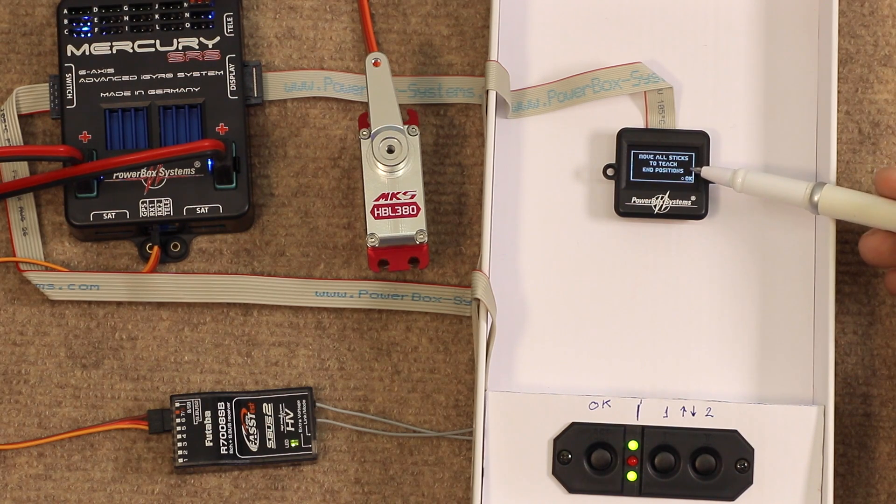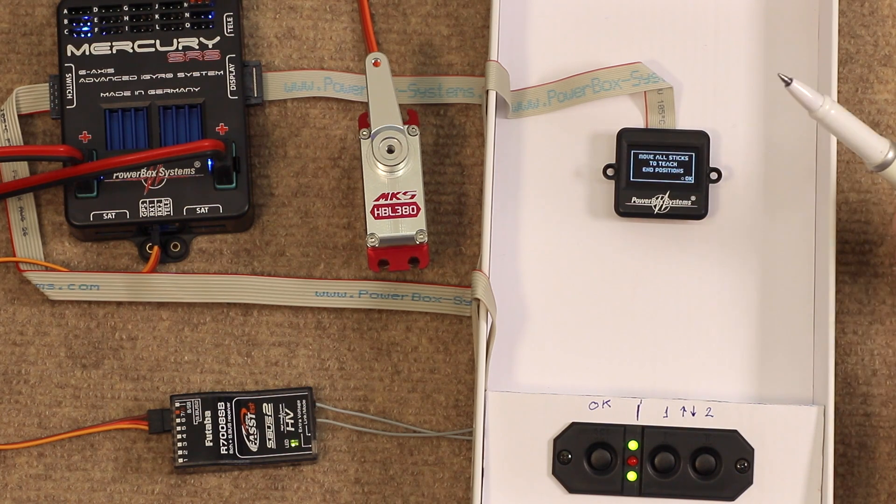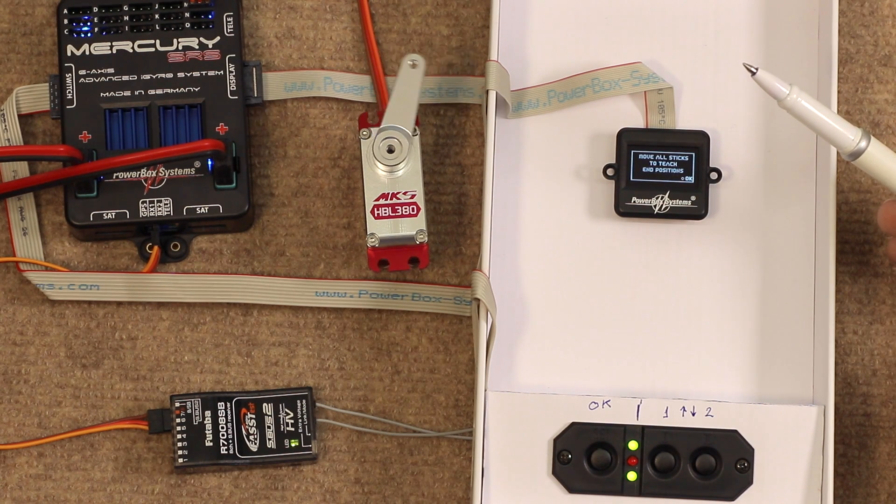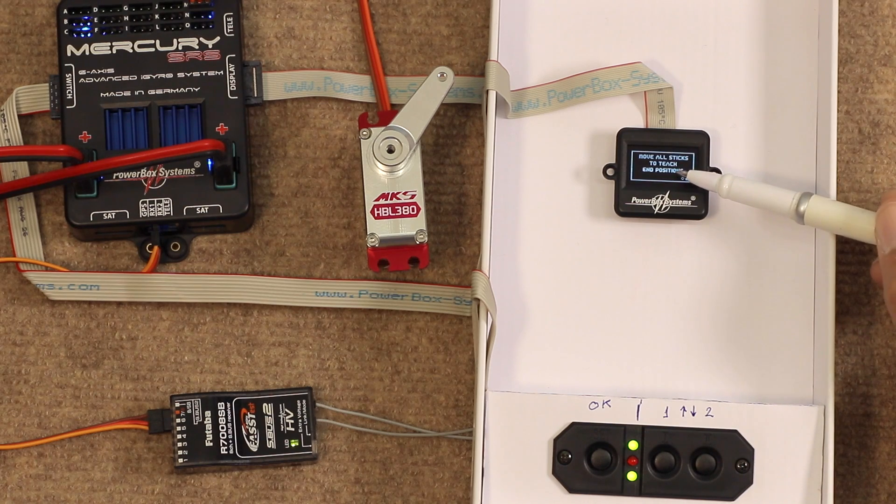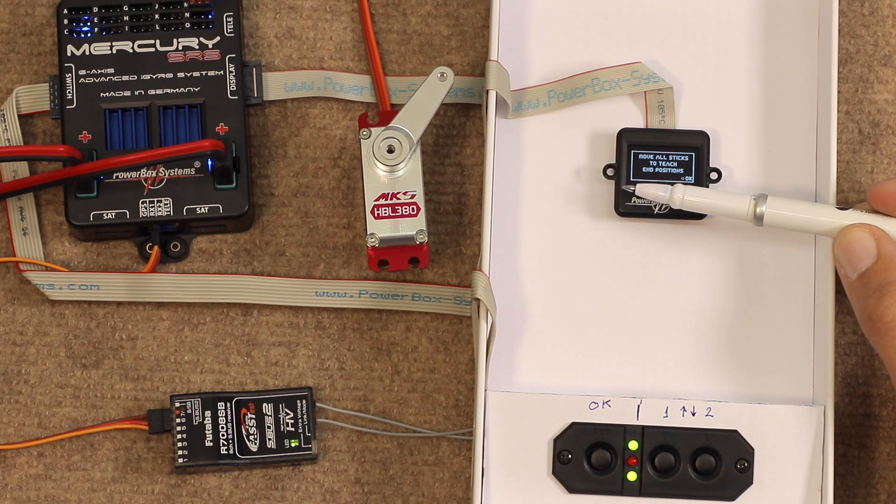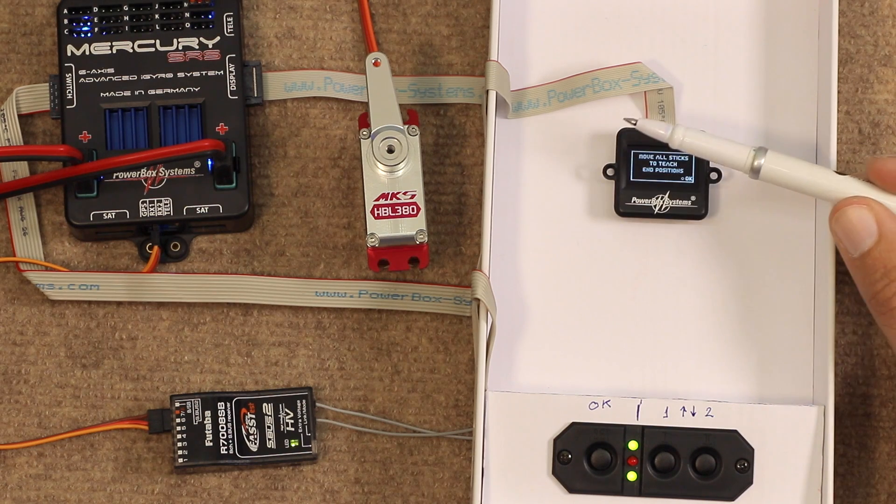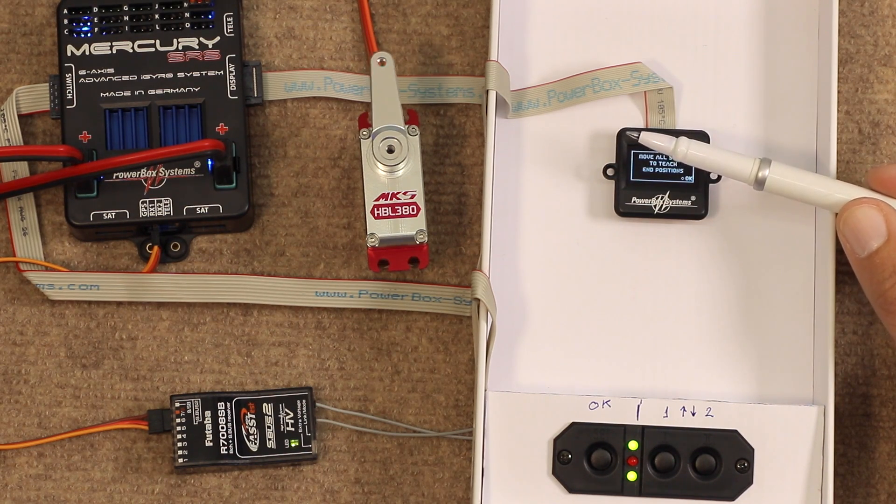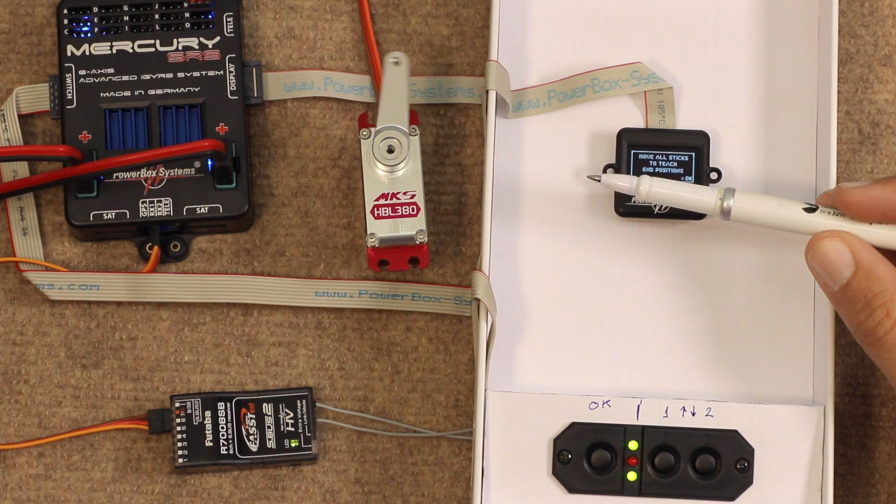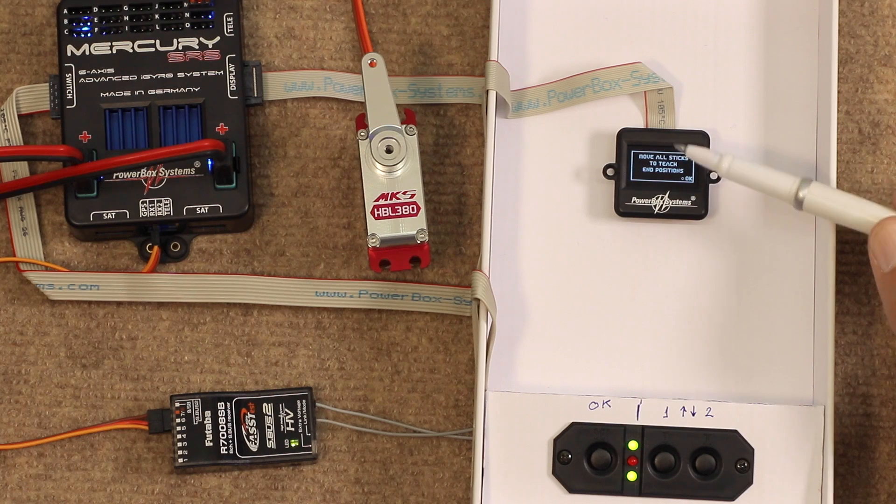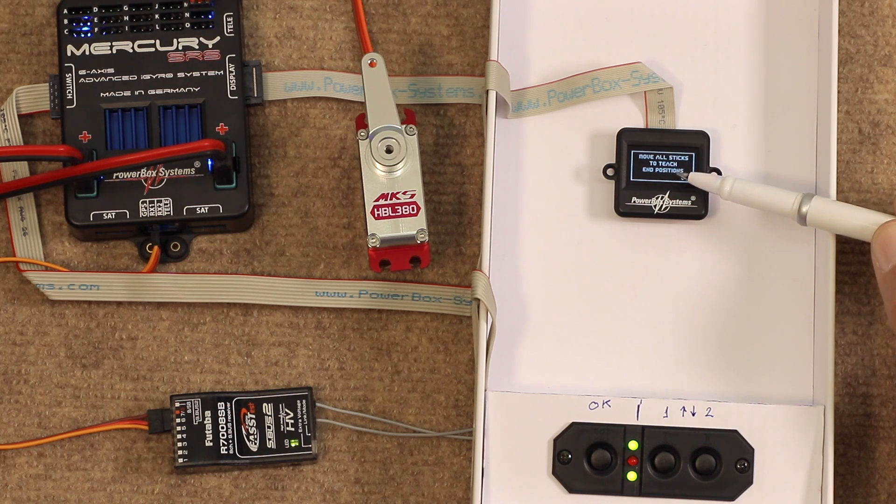It now asks us to move all sticks to teach end positions. Why does it do this? This is basically to prevent overstressing the servos. In other words, if your elevator moves to 45 degrees, when you move your servo on your elevator, it will move to those 45 degrees. What this screen is doing is the power box is learning that the servo should not go beyond that point. Because it could potentially cause damage to the servo, the linkage, or the elevator, or the surface itself. So basically, no matter what gyro input is needed, the gyro will never go beyond that point. OK, so we move all sticks, elevator, aileron, and rudder. And then press OK.